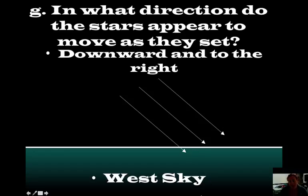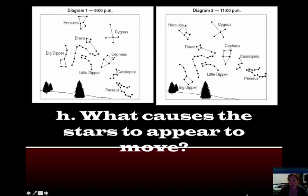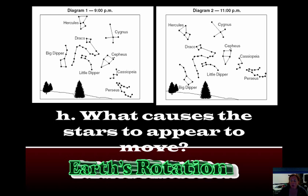What causes the stars to appear to move? Keep in mind, are the stars actually making circles around Polaris? No, it's actually Earth rotating. Earth's rotation is what causes these apparent motions. The real motion is Earth's rotation.